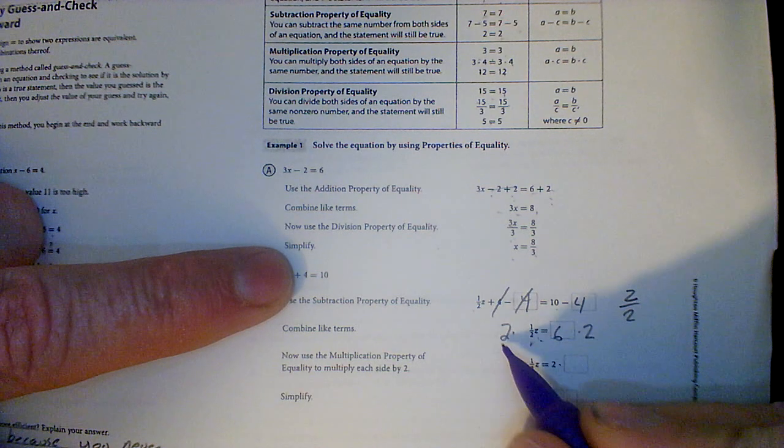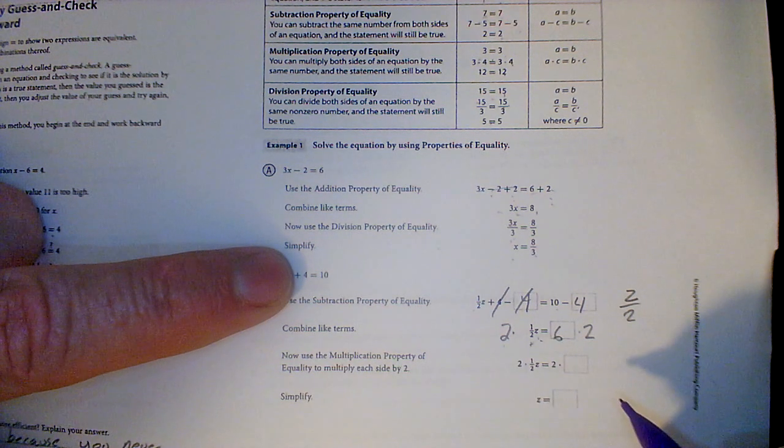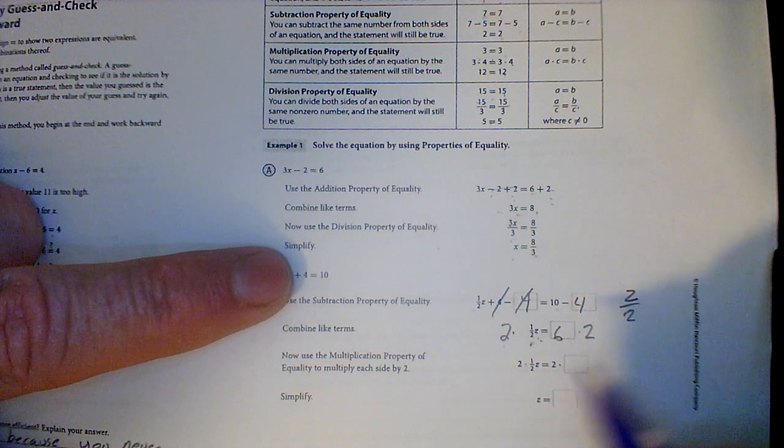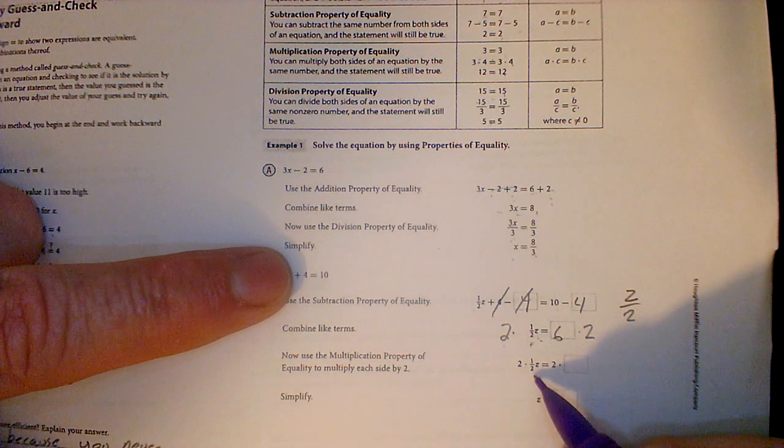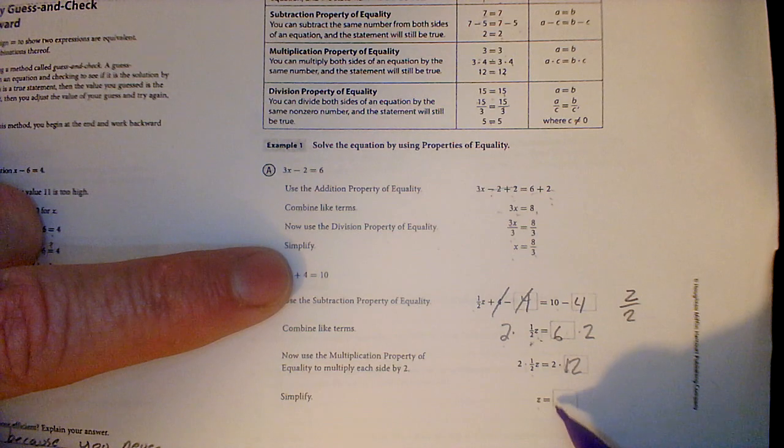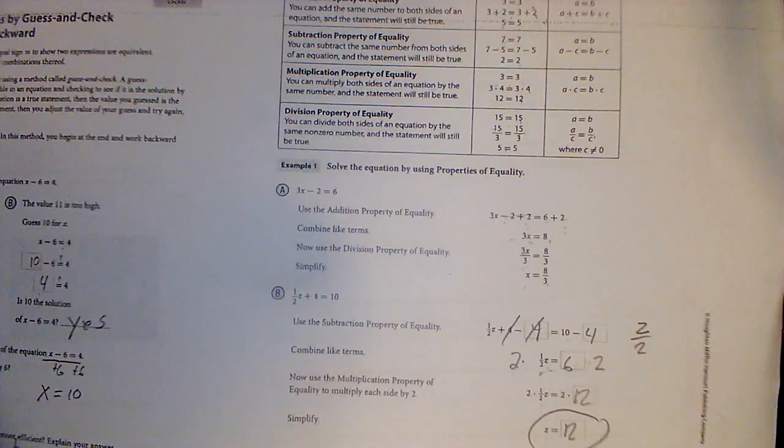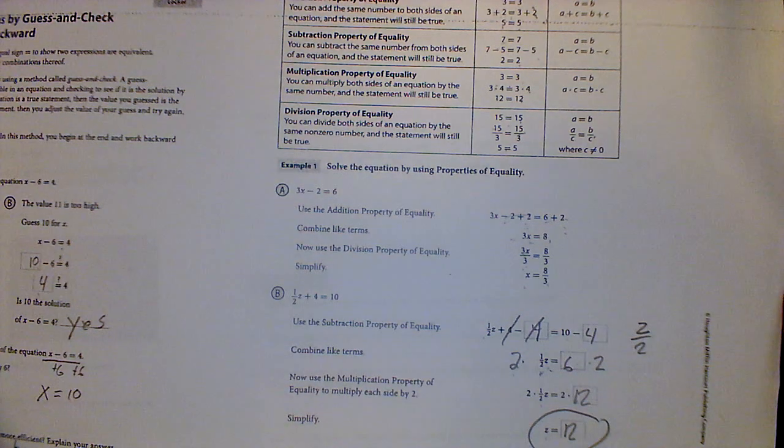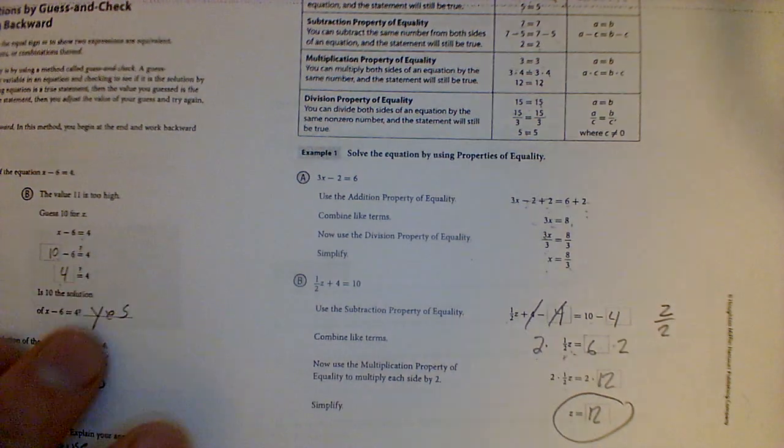1 half is really half of, so I multiply, I flip it upside down, multiply by 2. So, that is the multiplication property of equality. Well, 2 times 1 half goes away to z, and 6 times 2 is 12. Well, that's a whole lot quicker, isn't it? That's really the working backwards method.